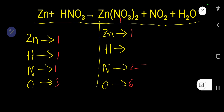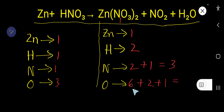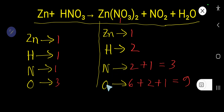Nitrogen from NO₂ is 1 and oxygen is 2, and from H₂O hydrogen is 2 and oxygen is 1. So in total we have 3 nitrogen and 8 or 9 oxygen on the right-hand side. Notice that nitrogen appears in two compounds and oxygen appears in three compounds, so we should balance those atoms last and first balance atoms present in only one compound.